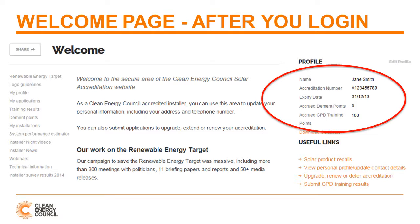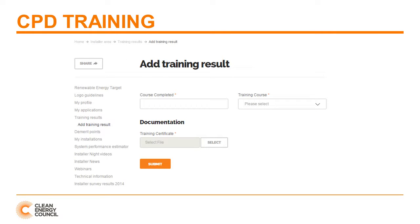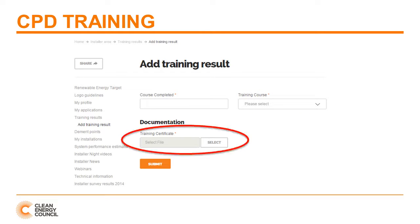Let's step through some of the important links on this website. You can view how many Continuous Professional Development points, or CPD, you have accrued. This is the same link you use to upload any training certificates for courses you have completed. To add a course result to accrue CPD points, simply enter the course name, select the course from the drop-down box, and upload a copy of the training certificate.